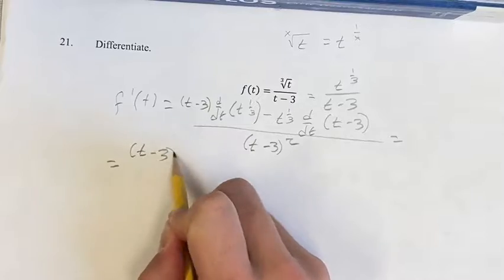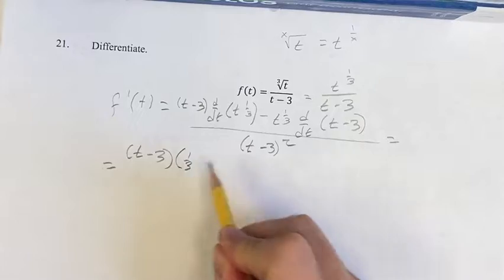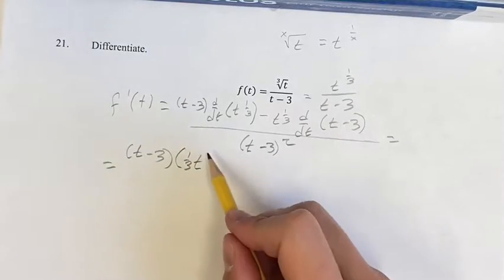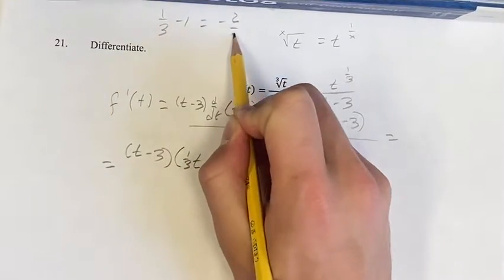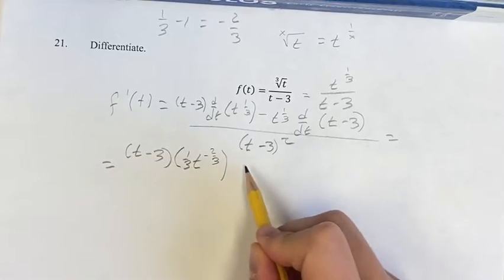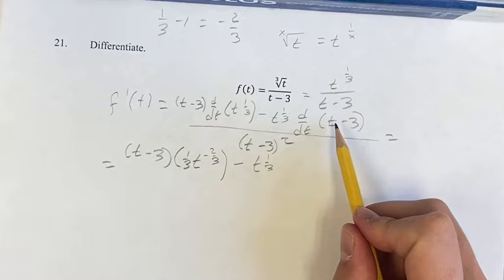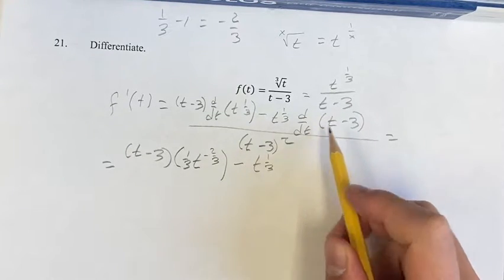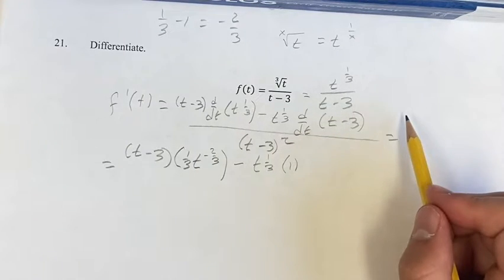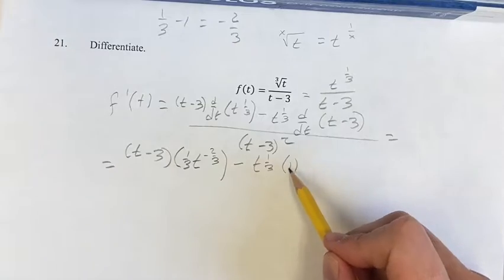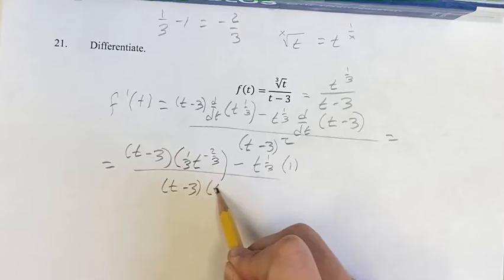First, calculating those derivatives. This power function, you take the exponent and bring it down as your coefficient, and then your new exponent is the old one minus 1, so 1 third minus 1, which is negative 2 thirds. So it's 1 third t to the negative 2 thirds. The derivative of t minus 3: we have a linear term, so its derivative is just its coefficient, 1, minus the derivative of 3, which is 0. So that's just 1, over t minus 3 times t minus 3.